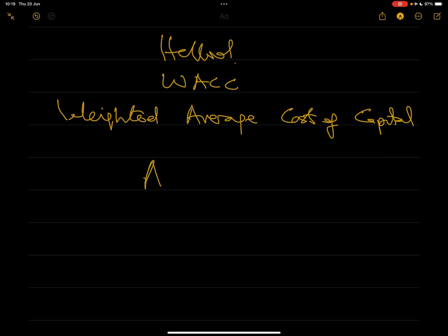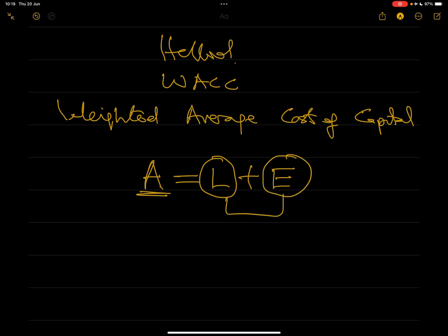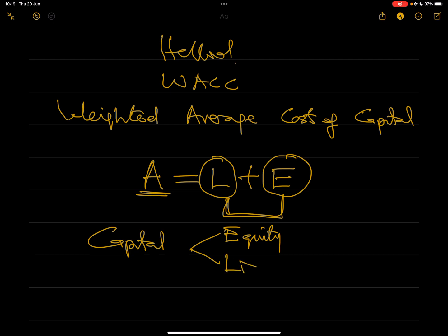Let's step back briefly and remember this popular equation from when we started the financial management paper course: Assets can be financed either through the use of liabilities, equity, or a combination of both. Capital used to buy an asset can only come from either equity or from liability, which is the same thing as debt.